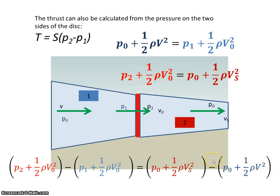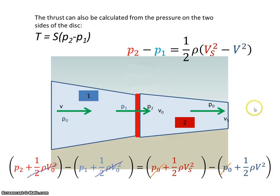So if we look at both sides some things cancel out. The p₀'s will cancel out, these will cancel out, and that's going to give me an equation: p₂ minus p₁ is equal to ½ρ(vₛ² minus v²).